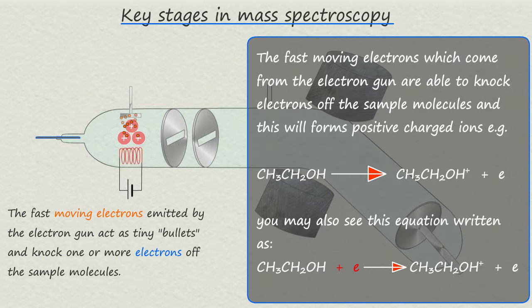Now as we have said the fast moving electrons which come from the electron gun are able to knock electrons from the sample molecules to form positively charged ions. Most of the ions which are produced will have a plus one charge.